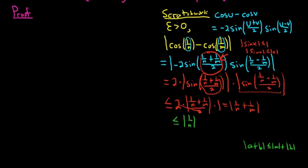So this is the absolute value of 1 over n plus the absolute value of 1 over m. Beautiful stuff. And little n and little m, they're positive integers, so we do not need these absolute values. We can drop them.